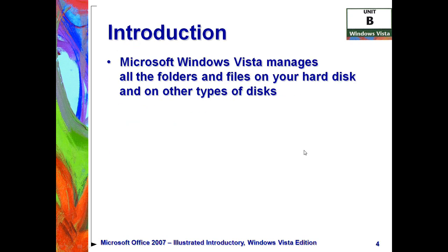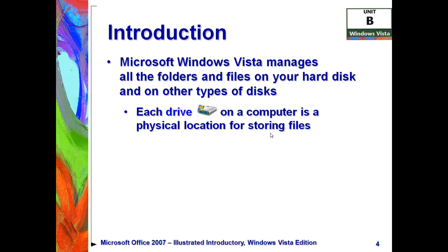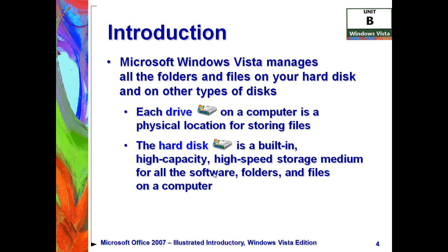Windows — general Microsoft Windows — will manage all your files and folders on your hard disk and on other types of disks attached to your computer. If you open up the Computer Window, you'll see that each drive has a little icon representing a physical location for storing your files, whether it be a hard drive, flash drive, or CD-ROM. The one we're mostly focusing on is the hard disk, which is your built-in high-capacity storage area where the operating system, software, folders, and files are saved.